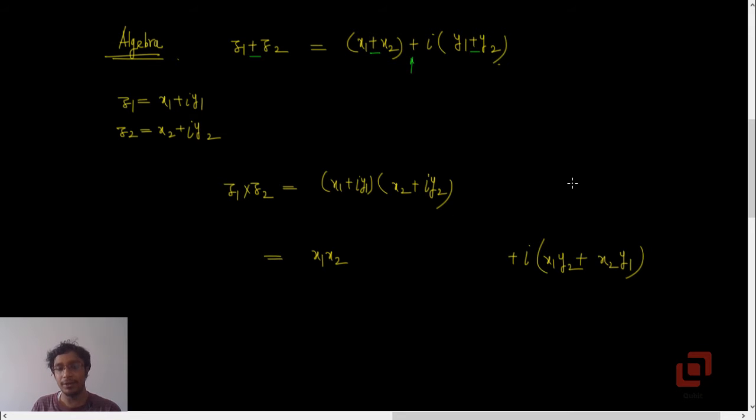And finally we have got i y1 into i y2. We have defined i squared as minus 1, so this will be minus y1 y2. So the product of any two complex numbers is another complex number whose real part is x1 x2 minus y1 y2 and whose imaginary part is x1 y2 plus y1 x2.